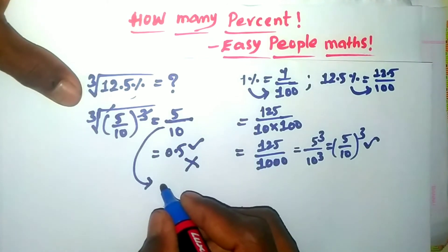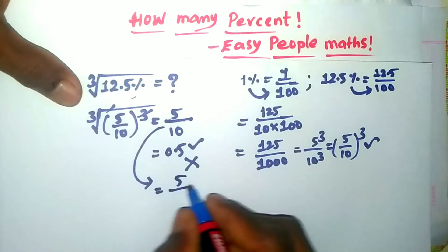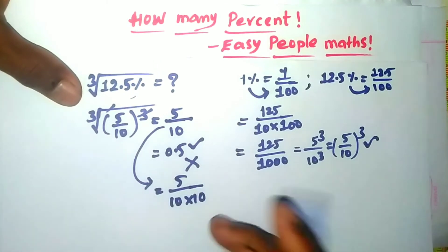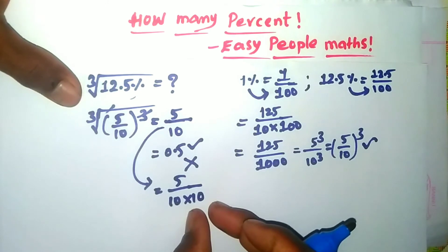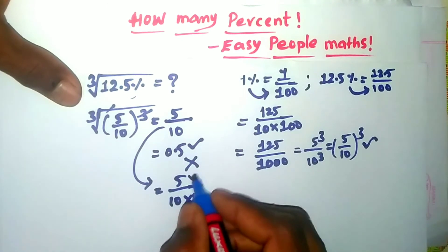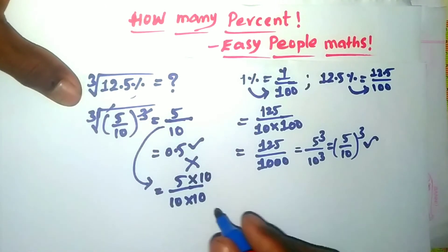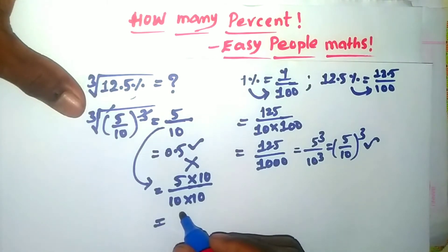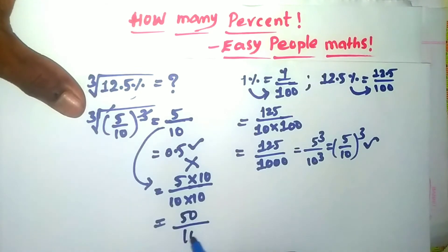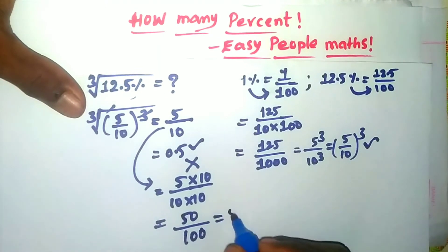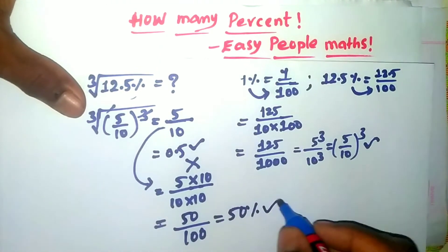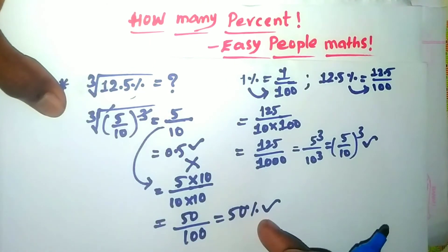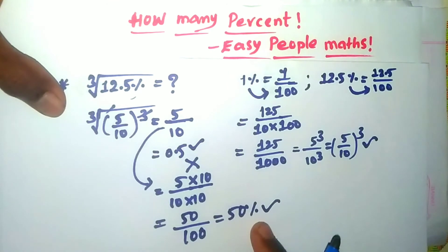Okay. 5 divided by 10, into 100. We will multiply the denominator: 10 multiplied by 10. If we have 5 into 10, we will get 50. Next is 100. So we get 50% — easy. Okay, we will find out the answer. Is it clear? Clear.